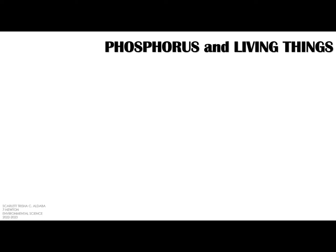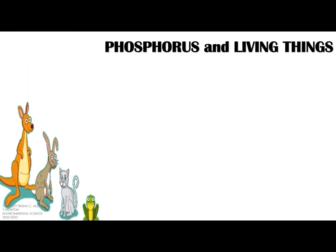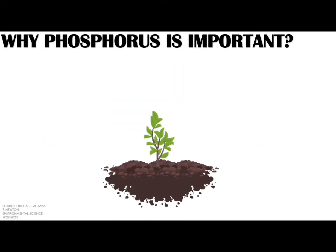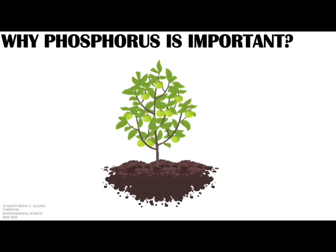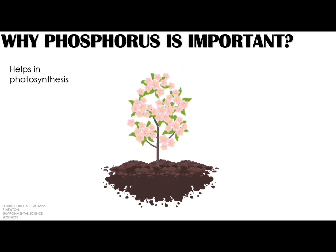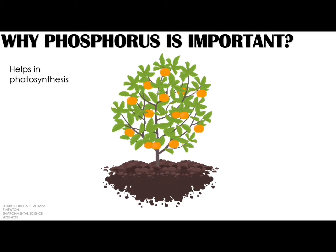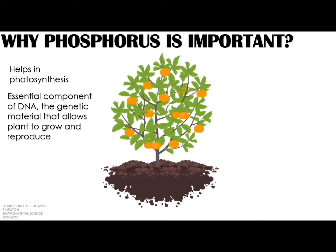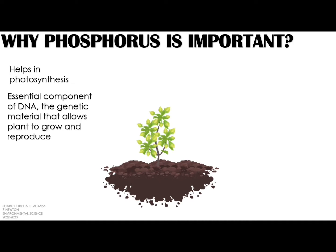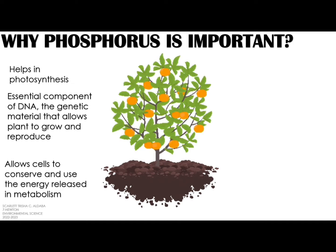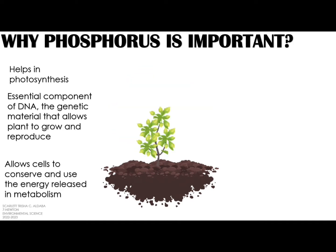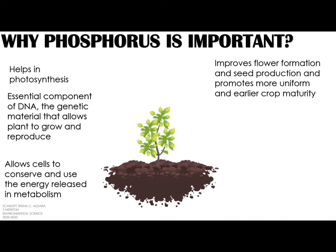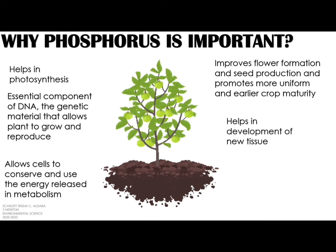Phosphorus is important to all living beings such as animals, plants, and humans. Phosphorus is important to plants because it helps them during photosynthesis. It is also an essential component of DNA, the genetic material that allows plants to grow and reproduce, and it allows cells to conserve and use the energy released in metabolism.